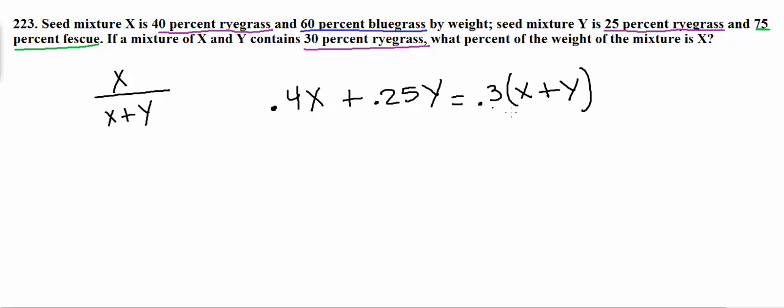Because again, this is the resulting mixture which is a combination of X and Y. This 40% is only X. This 25% is only Y. But the resulting mixture is going to be X and Y. So going from there, let's go ahead and write this out. 0.4X plus 0.25Y equals 0.3X plus 0.3Y.